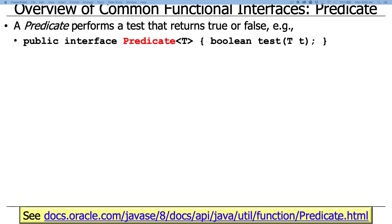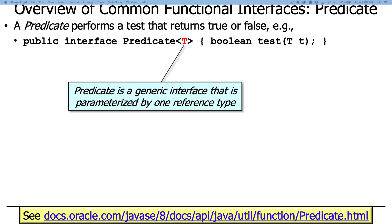So a predicate is an interface that performs a test that returns true or false. As you can see here, predicate is a generic interface that's parameterized by a single reference type. So it's predicate of T, where T could be some type, whatever it might need to be.